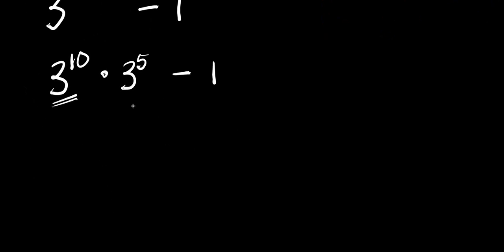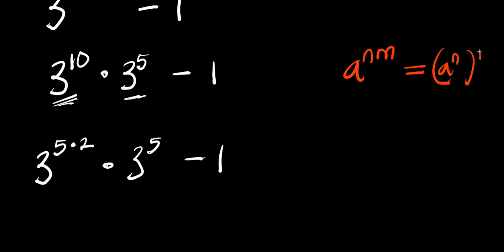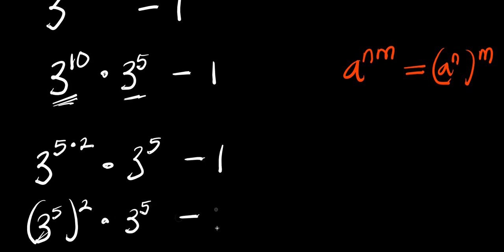We need to find the value of 3 power 10; we also need to find the value of 3 power 5. Finding the value of 3 power 10, we can simply express this as 3 power 5 times 2 — since 5 times 2 is 10 — so we have (3 power 5) times 2, times 3 power 5 minus 1. Remember, if you have a power n times m, it equals a power n raised to the power of m. This will simply give us 3 power 5 raised to the power of 2, times 3 power 5, minus 1.